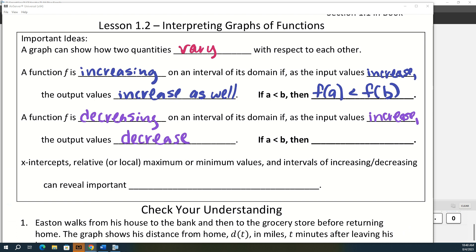And in the case of decreasing intervals, then if A is less than B, this time f of A should be greater than f of B. It should be graphed higher in this case.